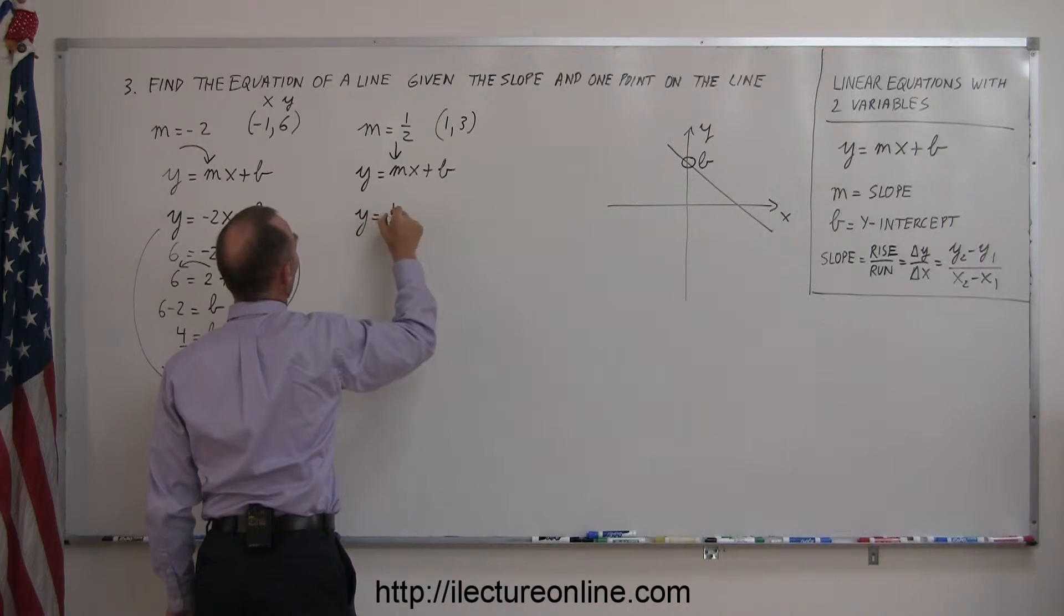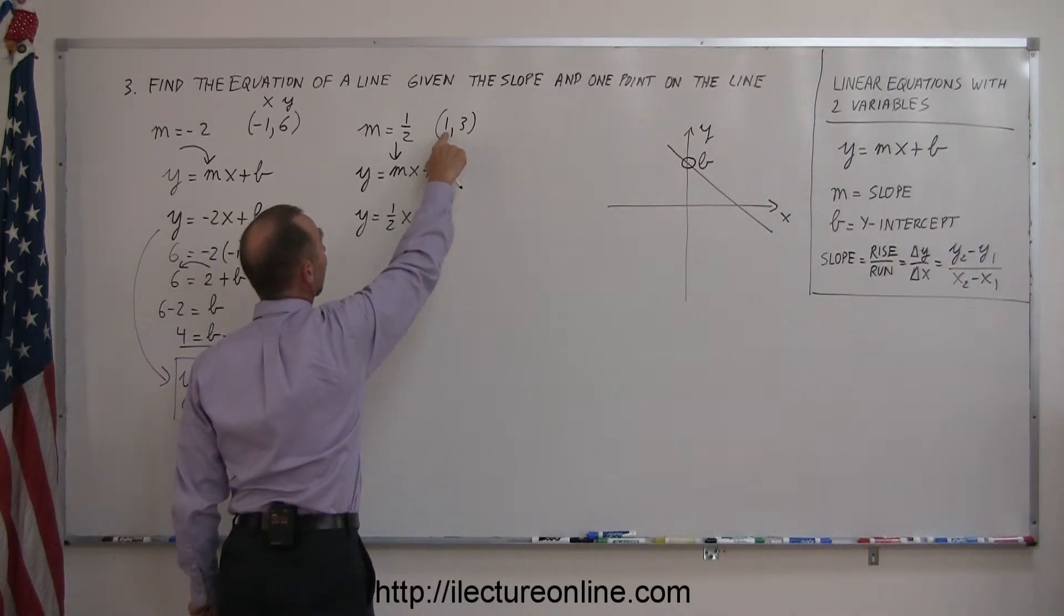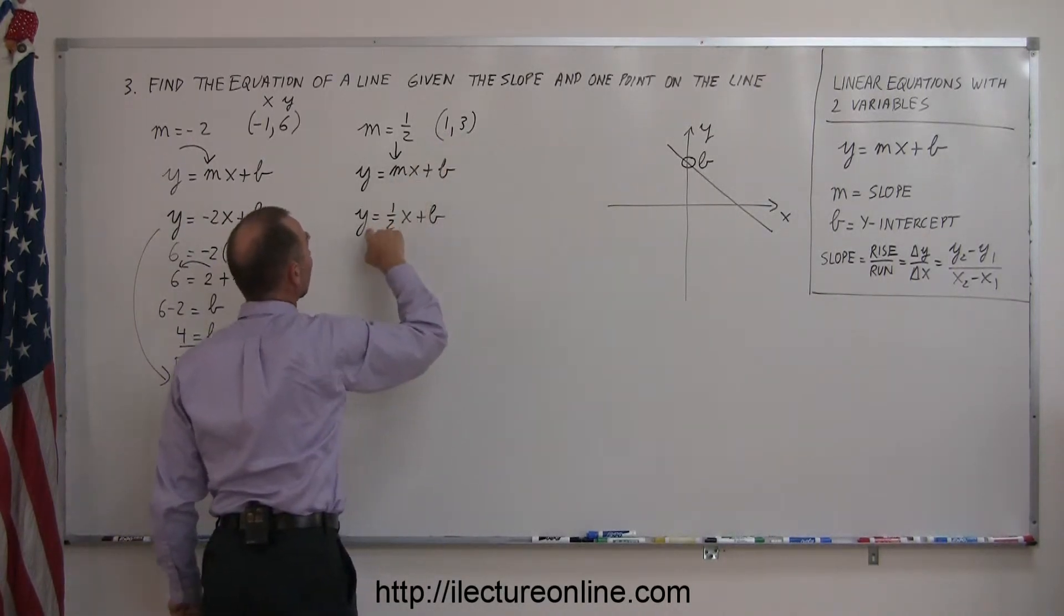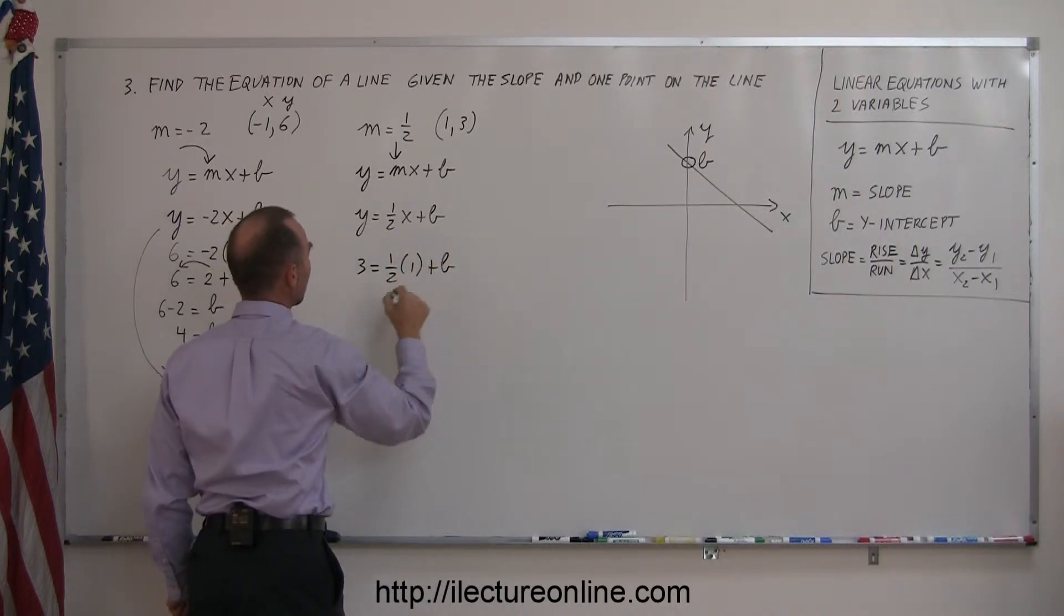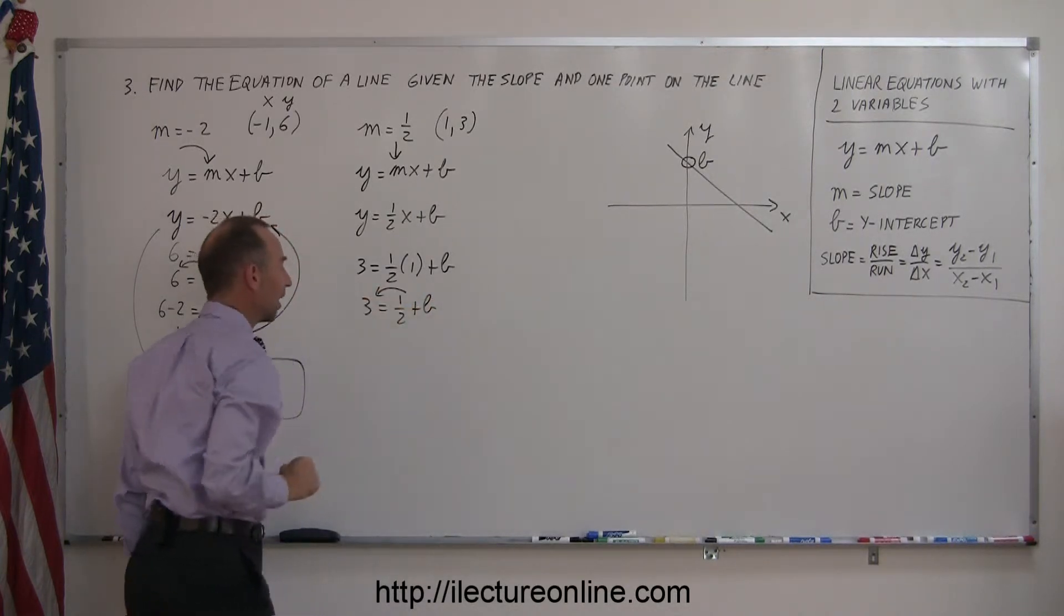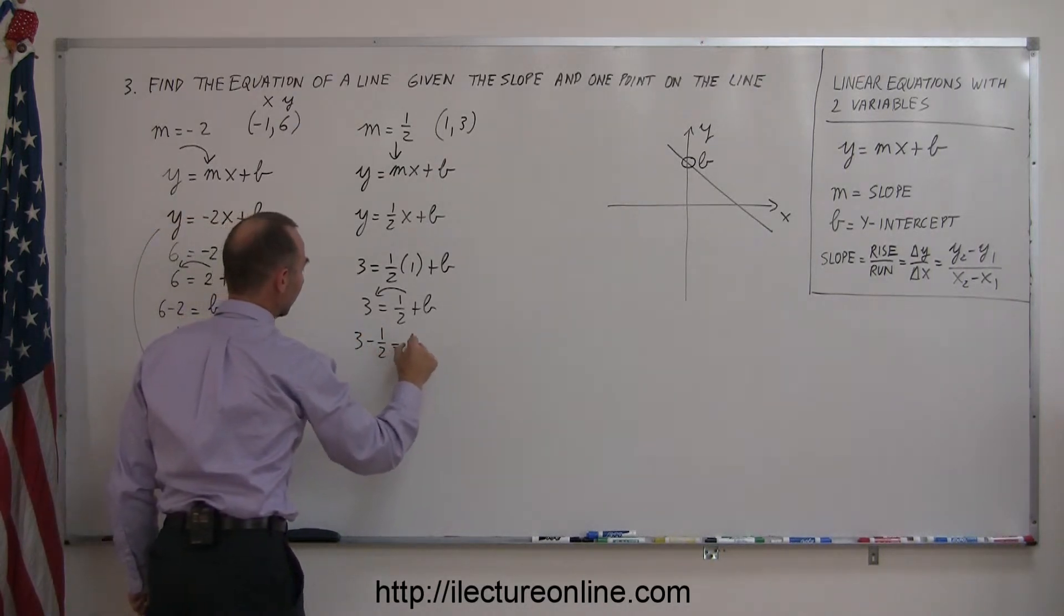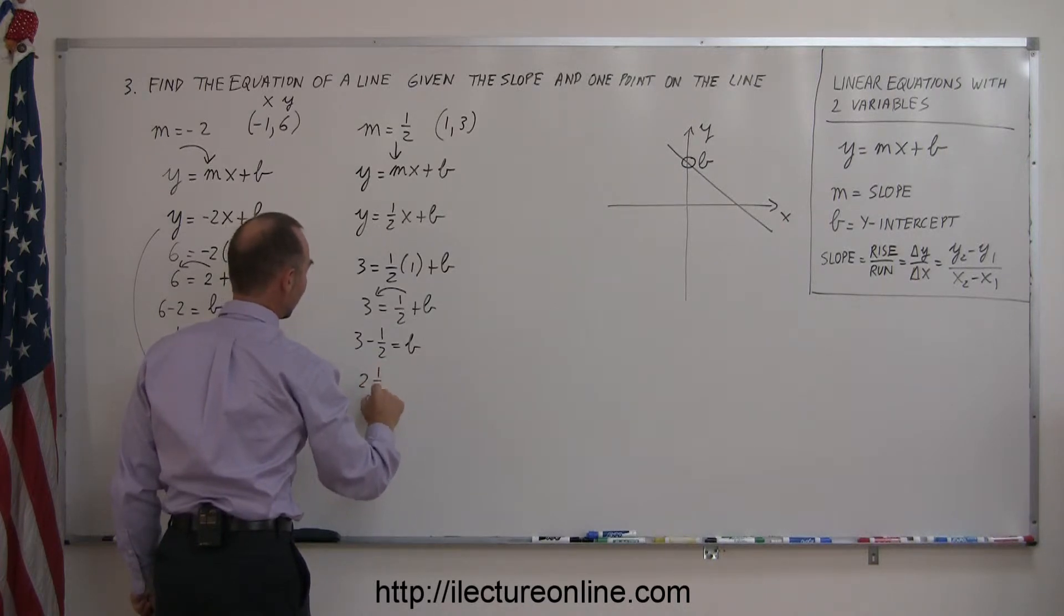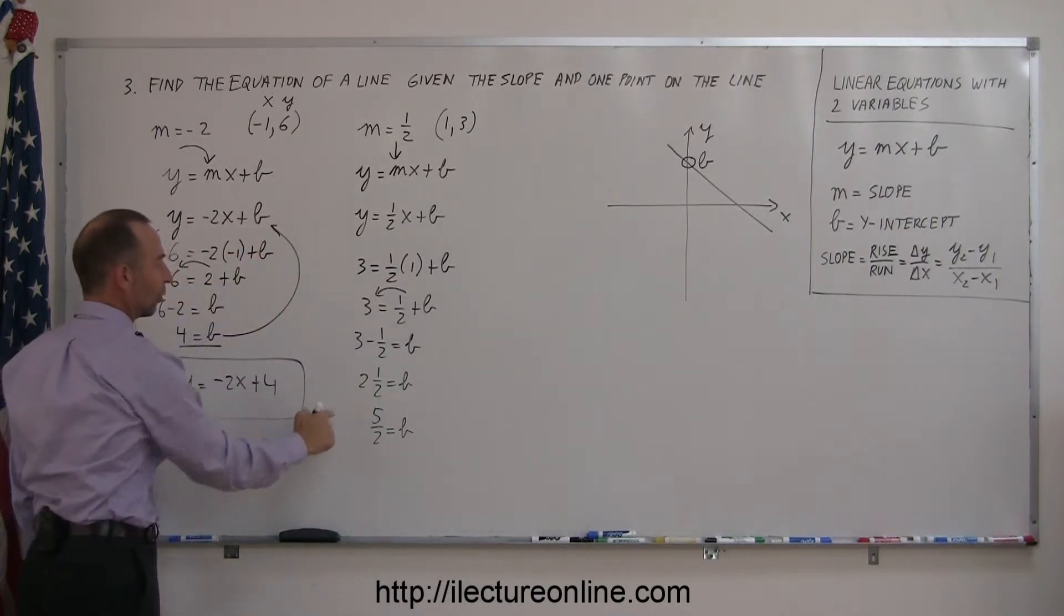The only thing left to do to find b is to take the point that you were given, take the x-value, plug it in here, take the y-value, plug it in there. So we have 3 equals 1 half times 1 plus b, or 3 equals 1 half plus b. Move the one half to the other side, so now we have 3 minus 1 half equals b, or that's 2 and a half equals b, or 5 halves equals b. You can write in either form as an improper fraction or a mixed number, it doesn't matter.